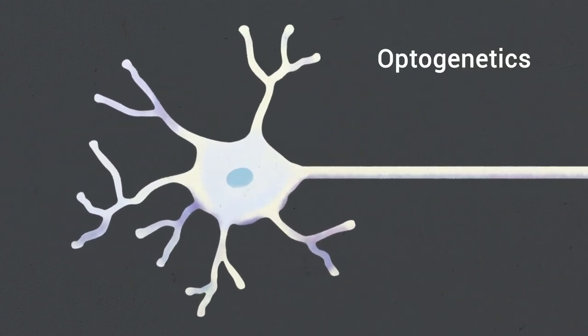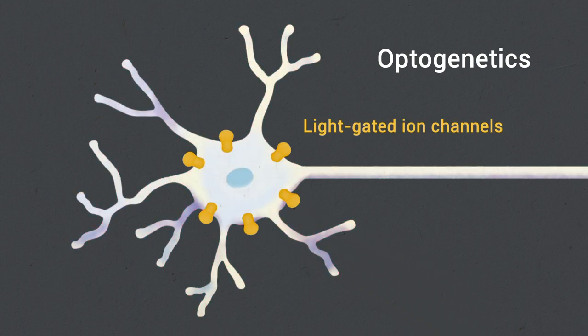This can be achieved by using optogenetics, a technique that involves introducing light-gated ion channels in the outer membrane of a target neuron.